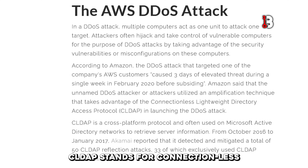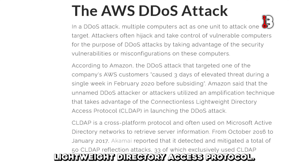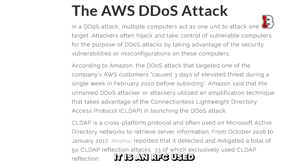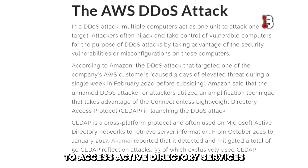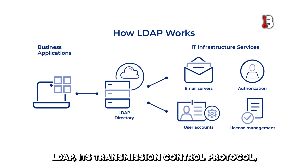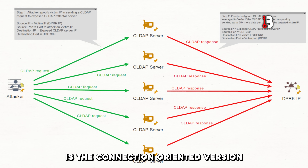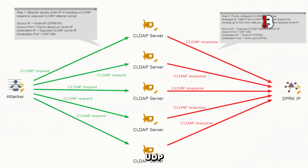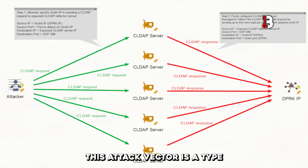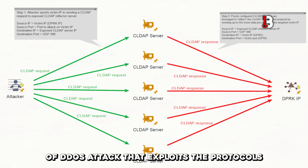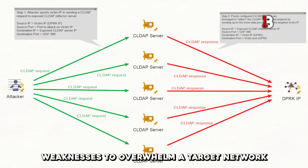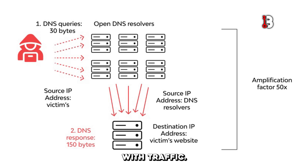CLDAP stands for Connectionless Lightweight Directory Access Protocol. It is an RFC used by various devices and servers to access active directory services over local or public networks. LDAP, its TCP counterpart, is the connection-oriented version, whereas CLDAP operates over UDP. This attack vector is a type of DDoS attack that exploits the protocol's weaknesses to overwhelm a target network with traffic.